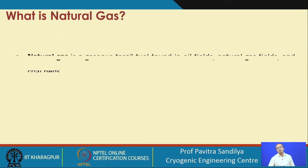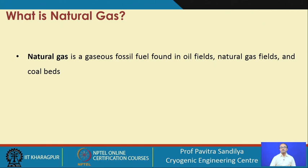First query: what is natural gas? Natural gas is a gaseous fossil fuel which is found in various types of oil fields, natural gas fields, and coal beds. Oil fields and natural gas fields are generally located in the sea, there are a few on land too, but coal beds are always in the landscape.